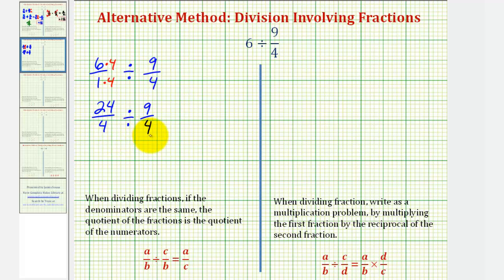But since our denominator is the same, all these pieces are the same size, which means this quotient is the same as determining how many 9's there are in 24. And therefore the quotient is equal to 24 divided by 9. Again, this is only true when our denominators are the same.